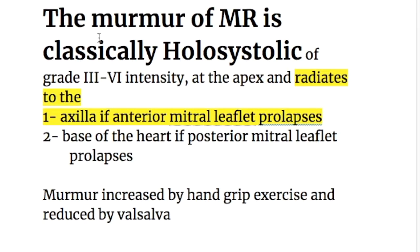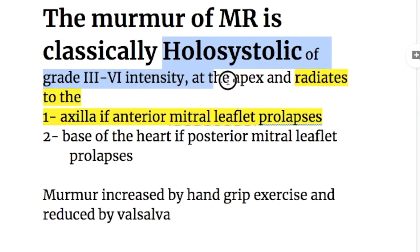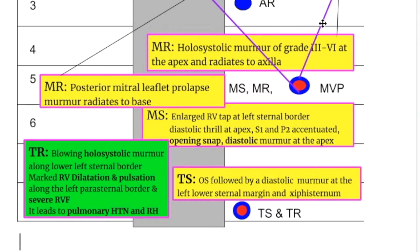The murmur of mitral regurgitation is classically holosystolic, grade 3 to 6 intensity, at the apex, and it radiates to two different positions: to the axilla if the anterior mitral leaflet prolapses, and to the base of the heart if the posterior mitral leaflet prolapses due to chordae rupture.